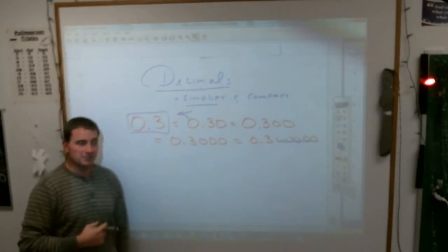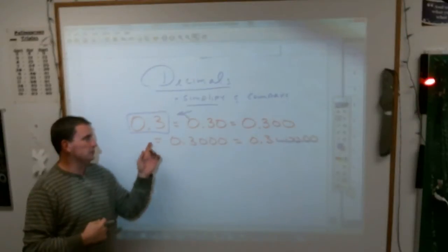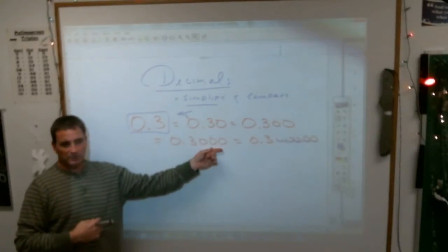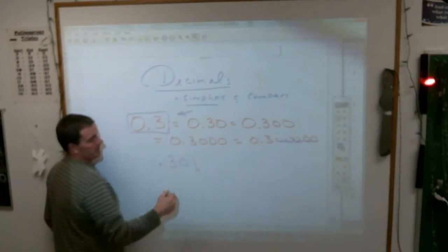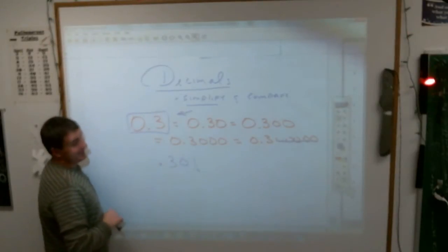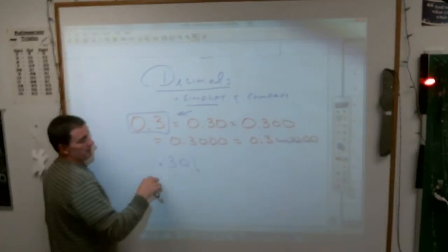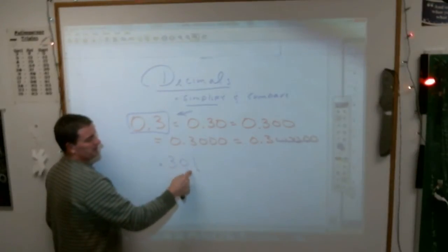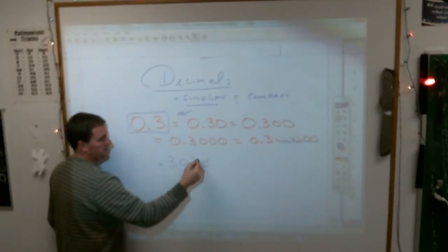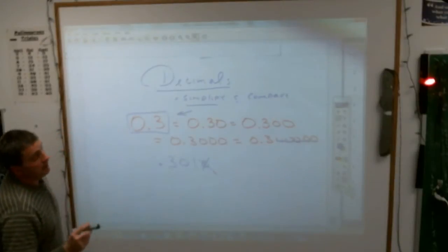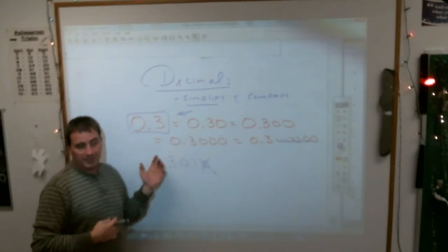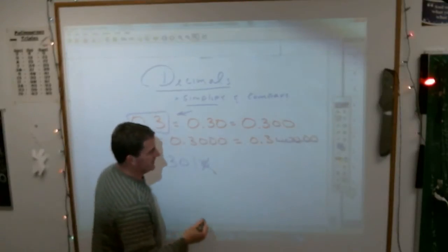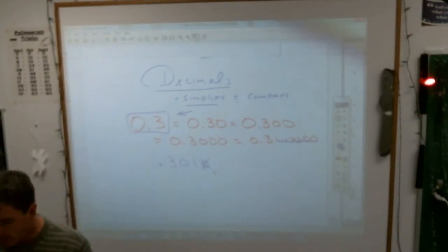So when they tell you to simplify the decimal, they're asking you to just get rid of the ending zeros. You can't get rid of a zero in the middle of something, you can't change that into 3.31 because that is not the same. Zeros have to hold down places there, but if there was an ending zero there you could. Sometimes though you want to add zeros in order to be able to look at decimals and compare them. For example, if I gave you this problem and asked you to compare: